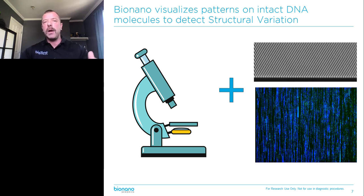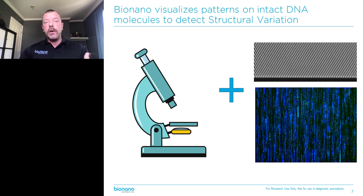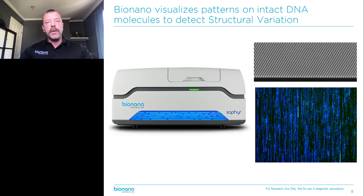In a karyotype, you have a couple hundred bands. We add 500,000 of these bands to the molecules, and then we look at these patterns on these long DNA molecules to call structural variants. Our instrument is called SAPHYR and it automates the imaging of these long molecules.